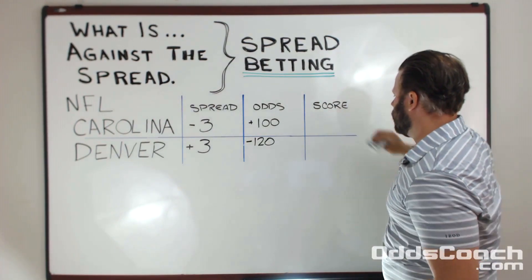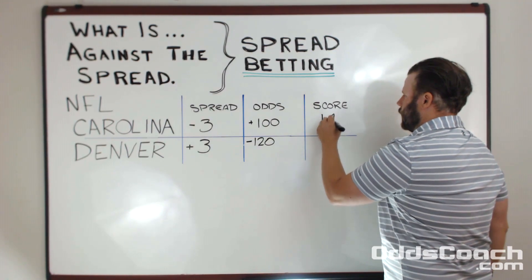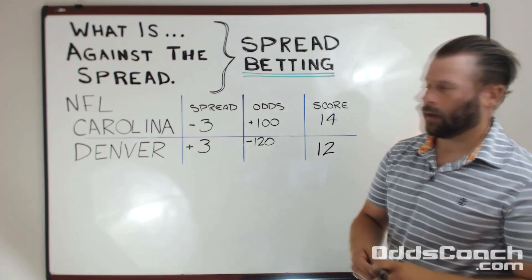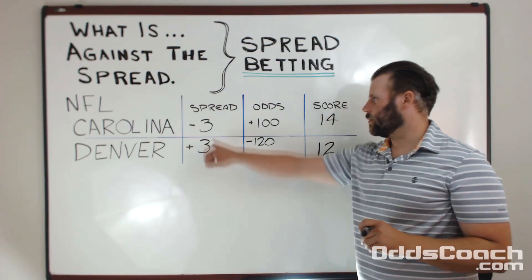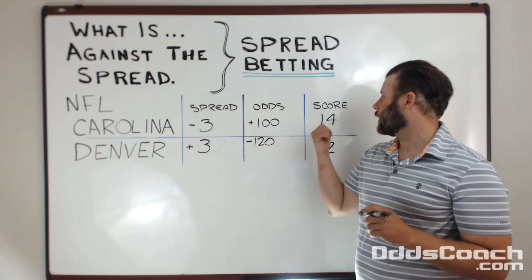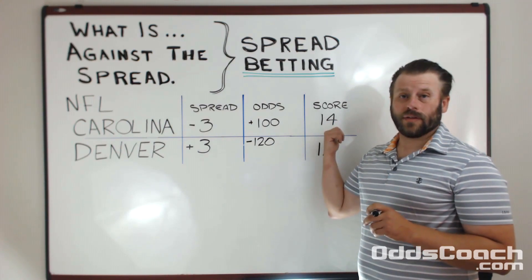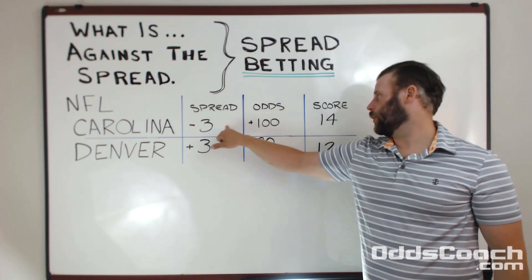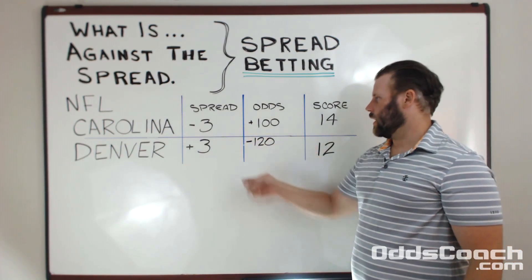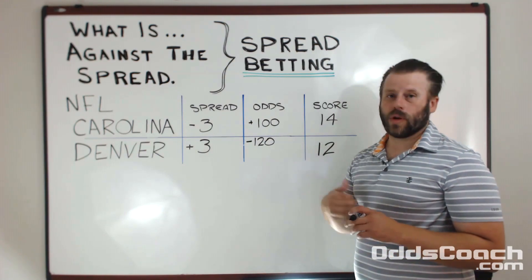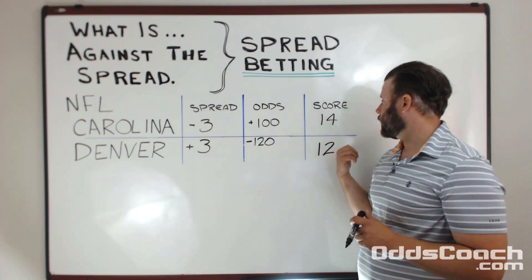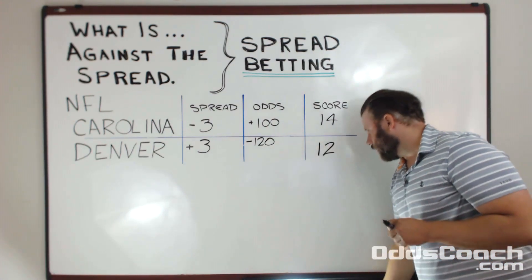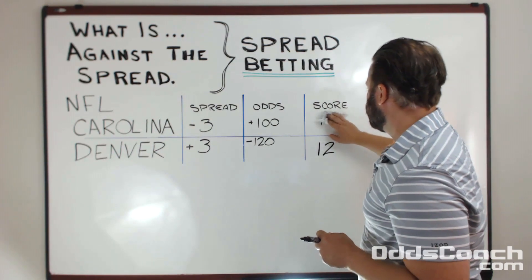Now let's try a different example where you have a final score of 14-12. In this case at the end of the game you're going to have to subtract your three points from Carolina, which puts you at 11 — so 11-12. A bet on Carolina minus three with that score is going to lose. Likewise for Denver, you take and add three points to their score of 12, which puts you at 15-14, so Denver is going to win that bet.